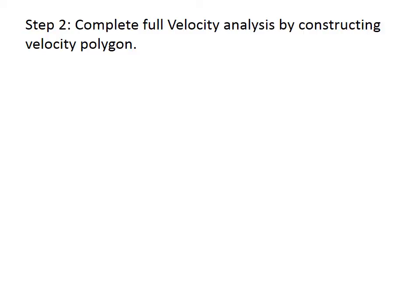The second step is to complete the full velocity analysis by constructing the velocity polygon. We use the relative velocity relationship. The velocity of point C relative to B is equal to the absolute velocity of point C minus the absolute velocity of point B — note this subtraction is vectorial. Reformatting: the velocity of point C equals the absolute velocity of B plus the relative velocity of C versus B.